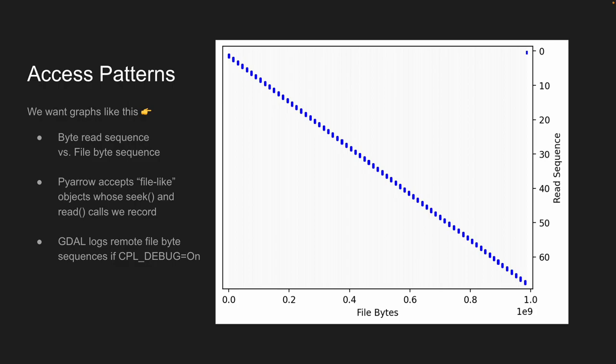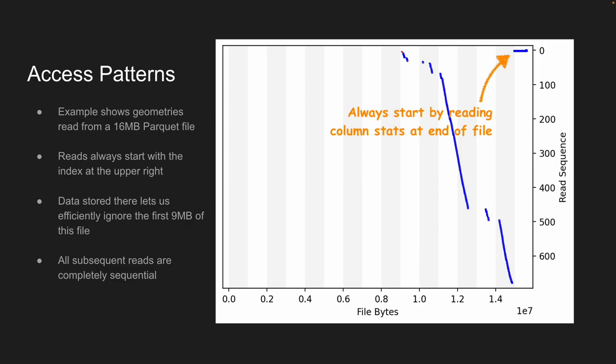We wanted to get to graphs with file bytes on the X axis and read sequence top to bottom. Both PyArrow and Google have instrumentation to create graphs like this — to actually see where those 1.5 seconds or four minutes are going during access. Here's a real example: a 16-megabyte Parquet file doing a spatial access. You can see the read of column stats at the end of the file, and then immediately figure out what to ignore.